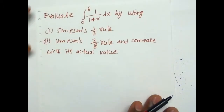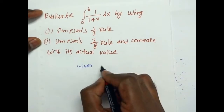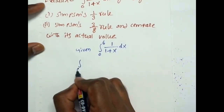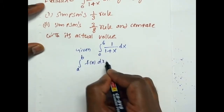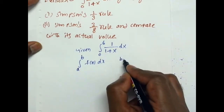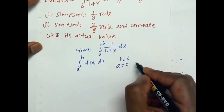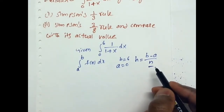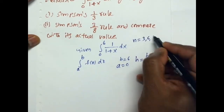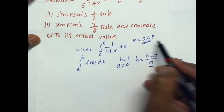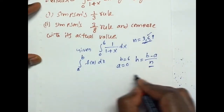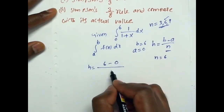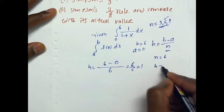First, write the given integral from 0 to 6 of 1/(1+x) dx. Compare with the general form, integral from a to b of f(x) dx. Here the upper limit b = 6 and lower limit a = 0. Now find H using the formula H = (b - a)/n. We assume n = 6, since for Simpson's 3/8 rule n must be a multiple of 3. So H = (6 - 0)/6 = 1.